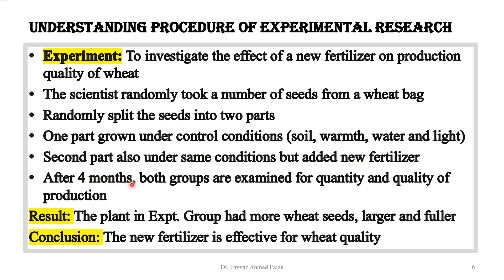After four months, both groups are examined for quantity and quality of production. We examine both groups of seeds grown under these two different conditions — one group received fertilizer and the other did not. If the plants in the experimental group had more wheat seeds that are larger and fuller, our conclusion would be that the new fertilizer is effective for wheat quality, producing seeds that are greater in quantity and fuller.